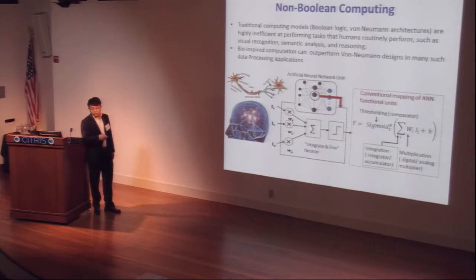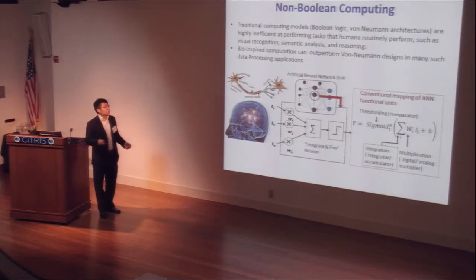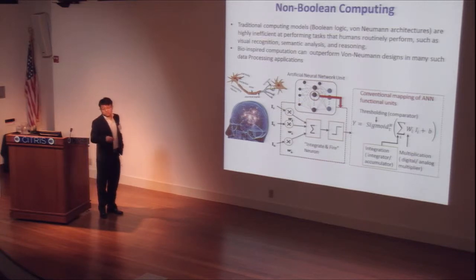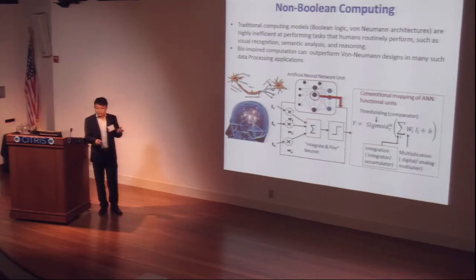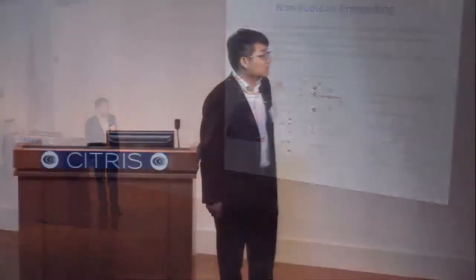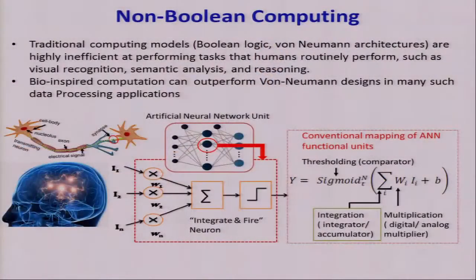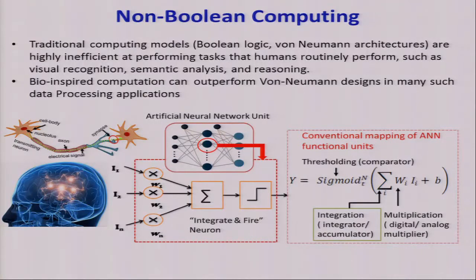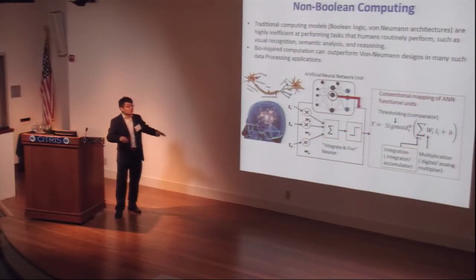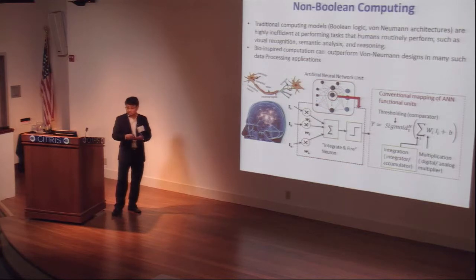Now we're going to non-boolean computation. Basically, traditional computation models are highly inefficient at performing some brain-like computations, such as image recognition, face recognition, or reasoning. The artificial neural network basic unit is a neuron that connects external stimulus through programmed synapses. The fundamental operation of the artificial neural network is just a threshold operation of the weighted sum of the inputs, which you can see here. This is the most simple mathematical model of the artificial neural network.